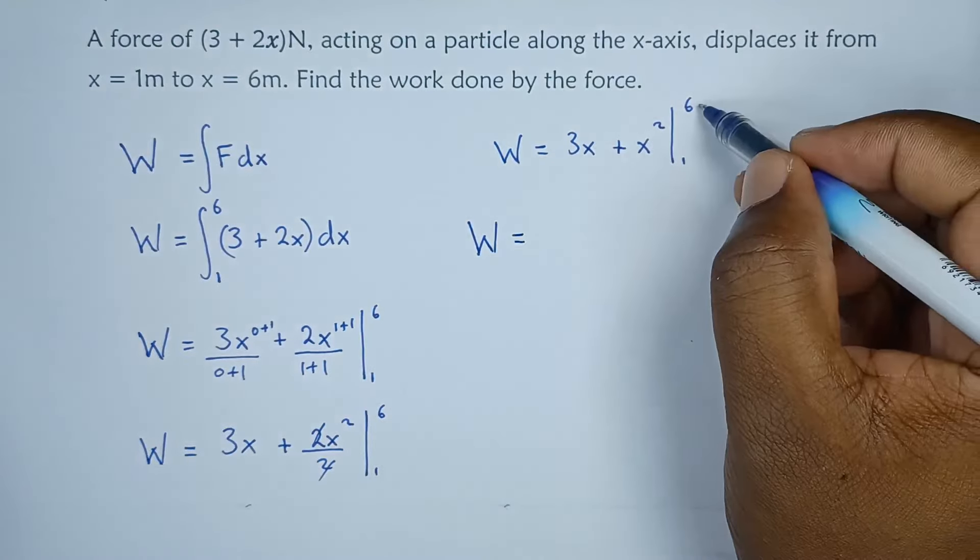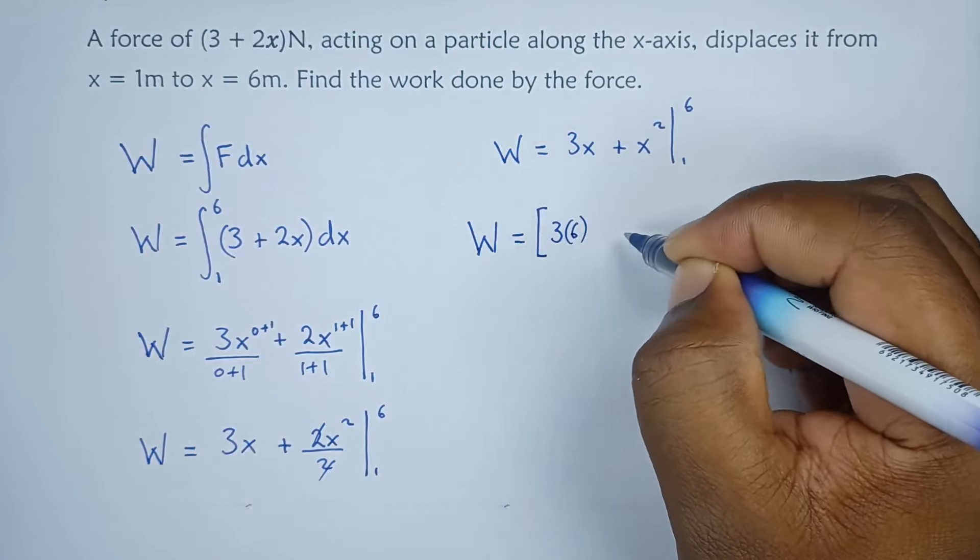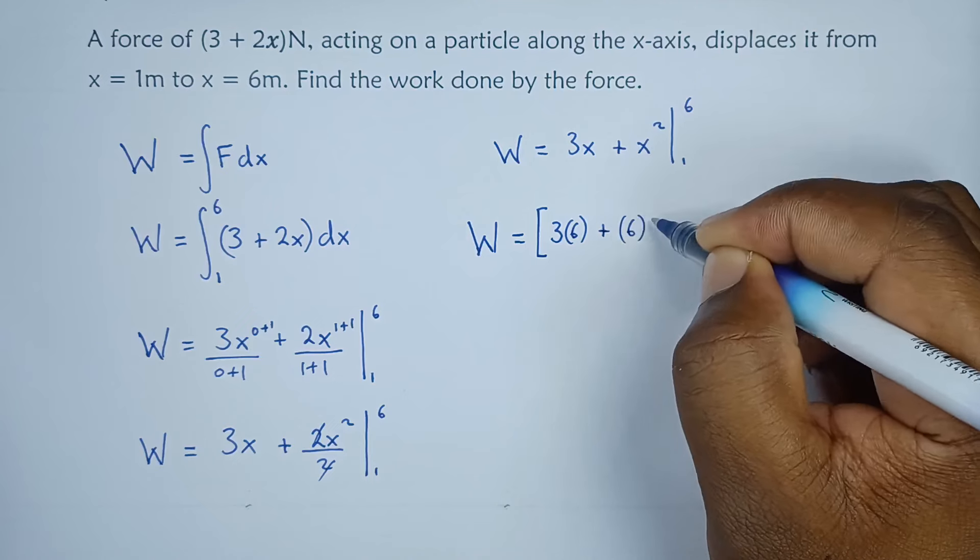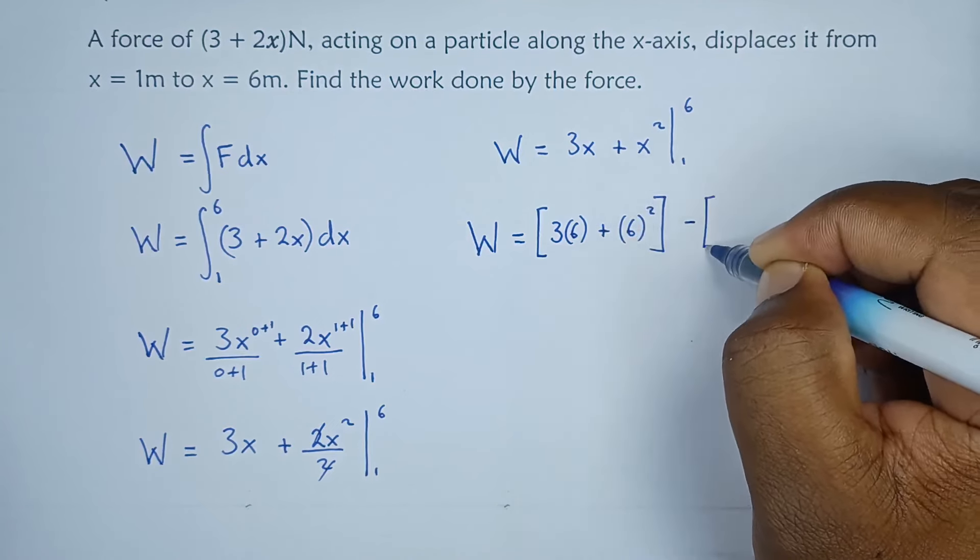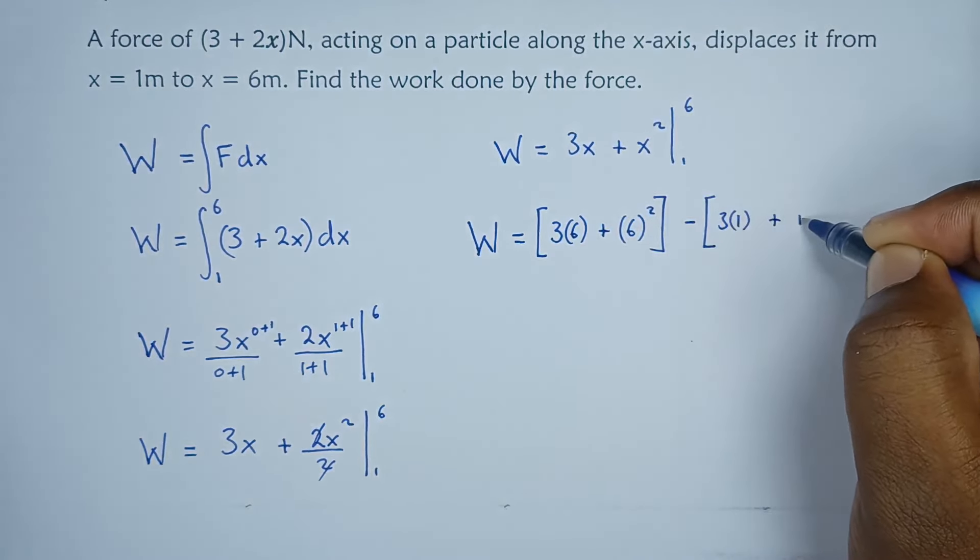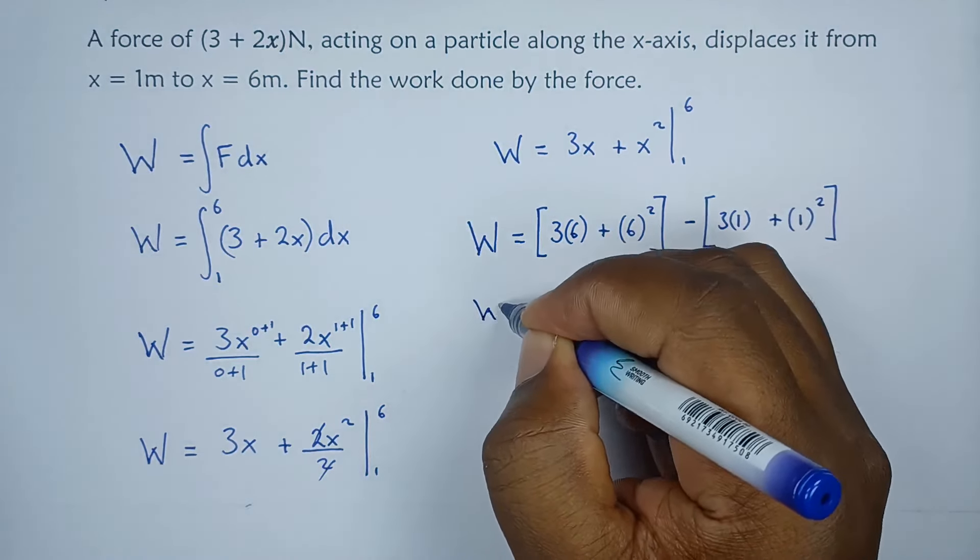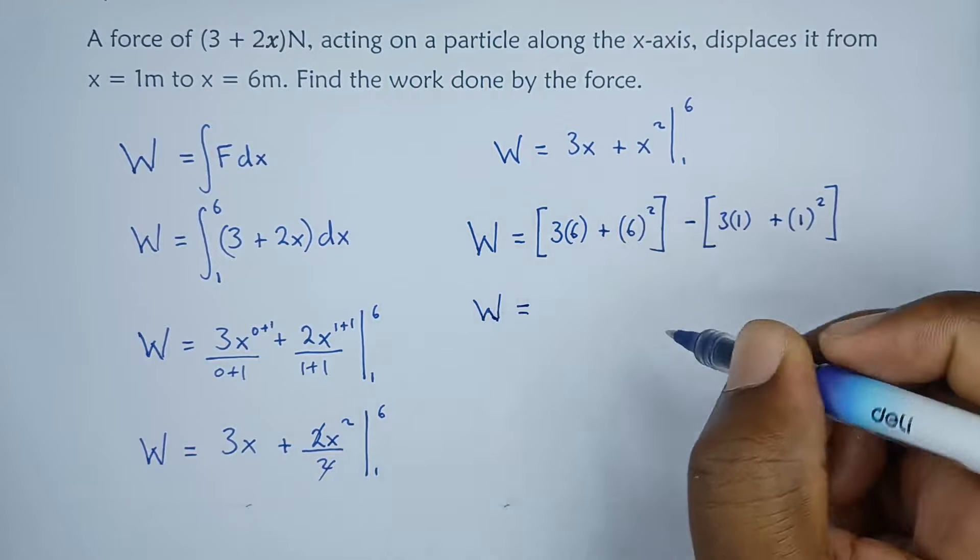Meaning that work done will be equals to, let's replace x with the upper limit, that is three times six plus six squared, minus the lower limit three times one plus one squared.